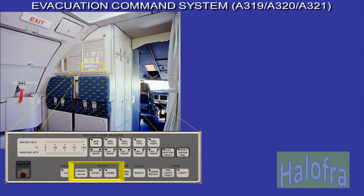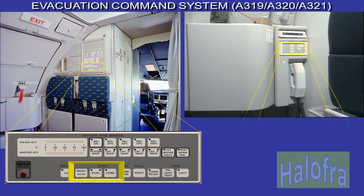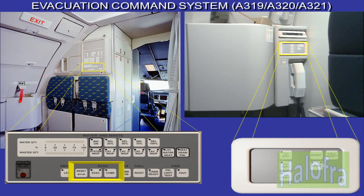The emergency evacuation alert system may be activated either from the cockpit or the purser station. An evacuation signal and a horn reset push button are located at the purser station, at the aft left crew station and in the cockpit.